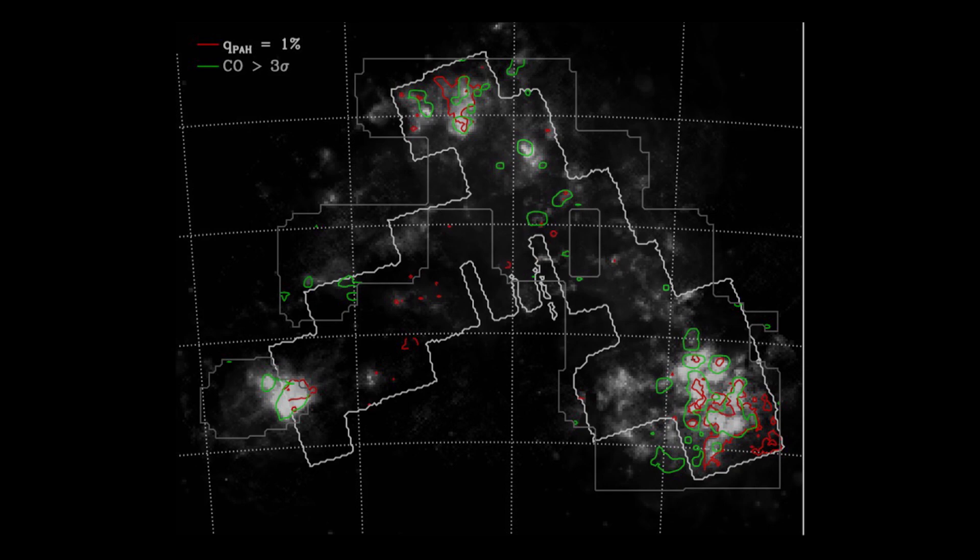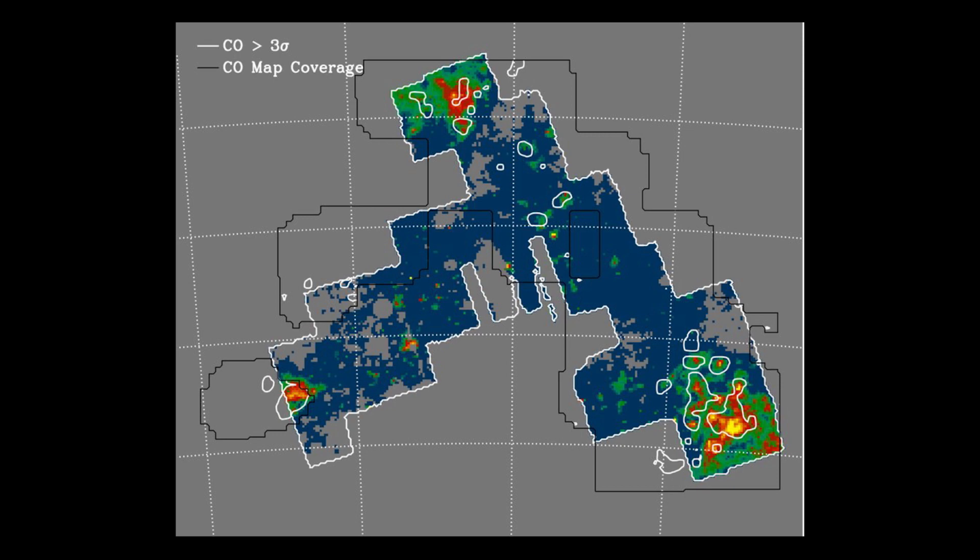So what I do is I make maps of nearby galaxies looking at the infrared light from dust. And I use that to infer how much dust there is and what it's made of and how it changes depending on where you're looking in a galaxy.